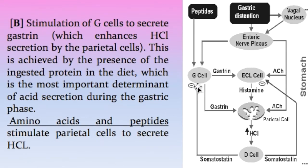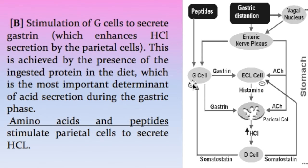The second factor which activates the G cell to produce gastrin is the presence of protein in the meal. Undigested protein — such as peptides and amino acids — has a strong stimulatory effect on the G cell to produce gastrin, which acts on two levels: either on the enterochromaffin-like cell or directly on the parietal cell, resulting in production of hydrochloric acid.